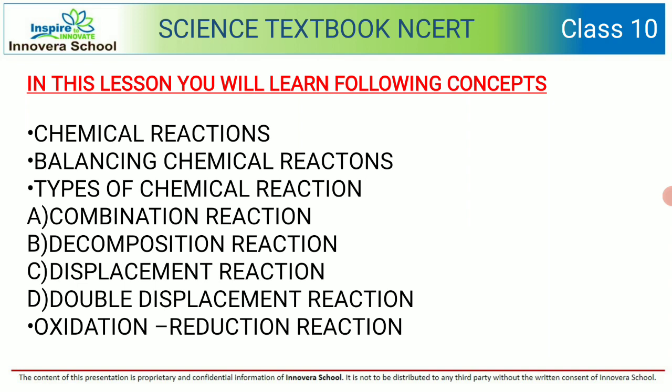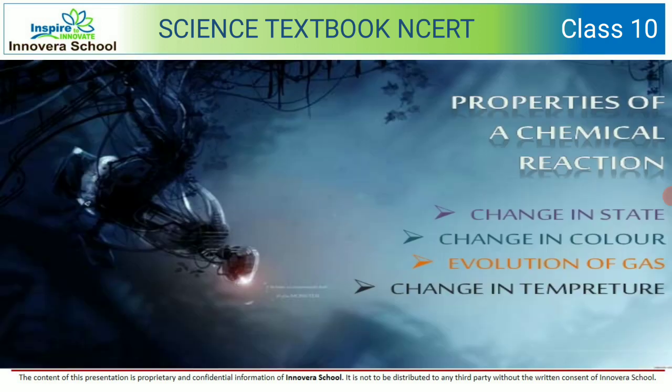The types also include double displacement, oxidation, and reduction. We will also look at the properties of a chemical reaction. There are four main properties: change in state, change in color, evolution of gas, and change in temperature.